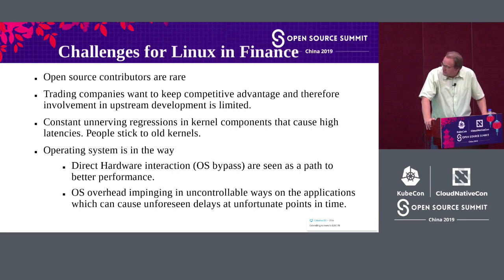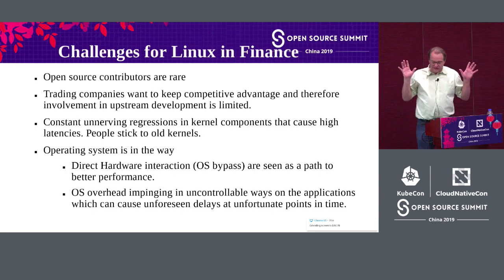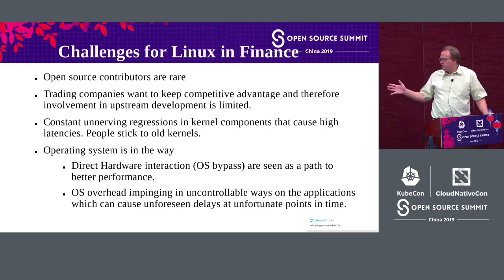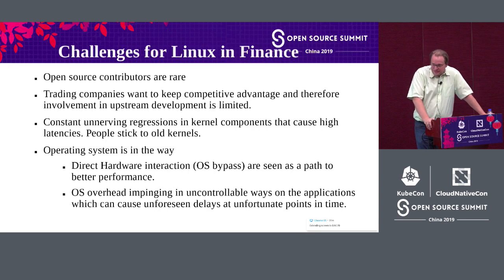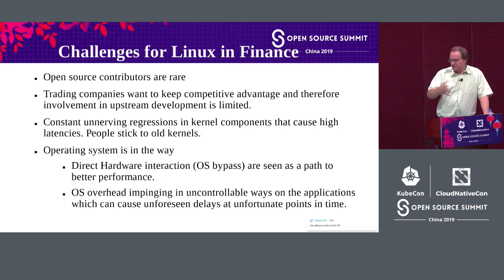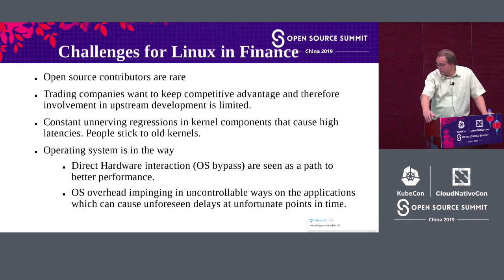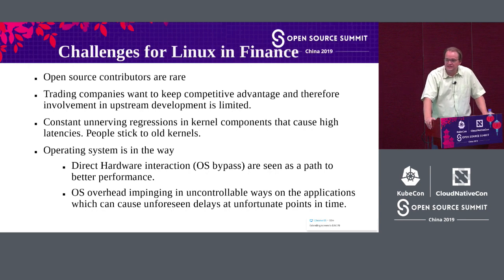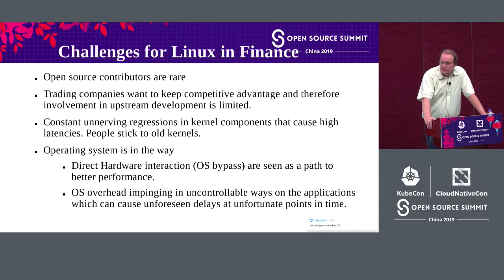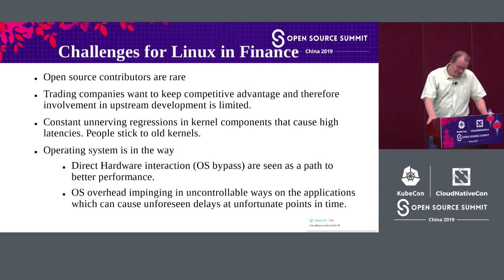The recent development is to restrict the kernel to a certain portion of the system and have the rest interact directly with the hardware — using DPDK to interact directly with networking and SPDK to interact directly with storage — thus bypassing all operating system layers. The OS overhead is seen as impinging in uncontrollable ways, with unknown sources of latency. The kernel has also been modified so you can dedicate certain CPU cores entirely to trading logic, with the OS staying away from those cores. This dedicated-core isolation is now part of standard kernels.